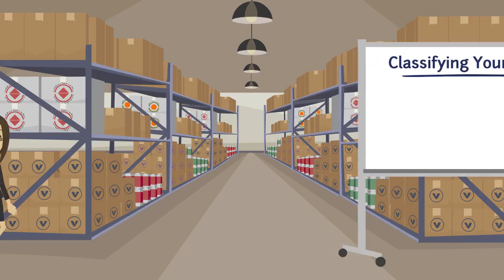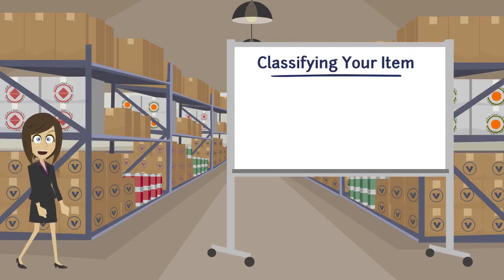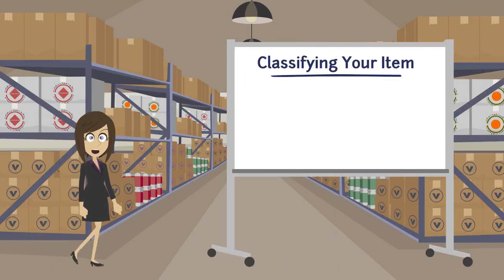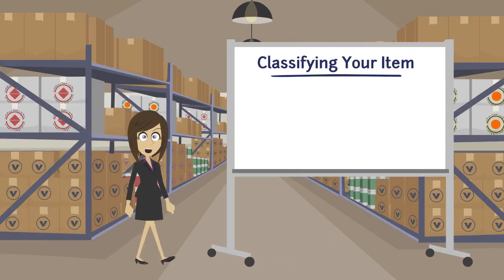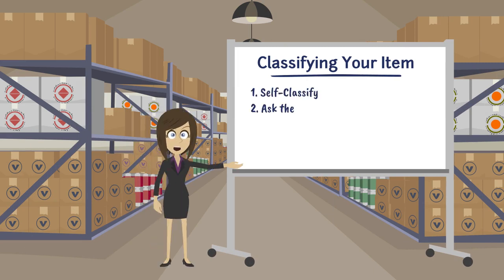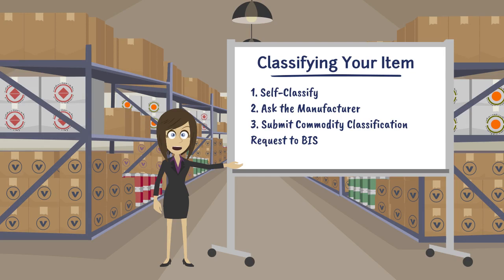There are three ways to determine the Export Control Classification Number. You can self-classify, ask the manufacturer, or submit a classification request to the Bureau of Industry and Security.